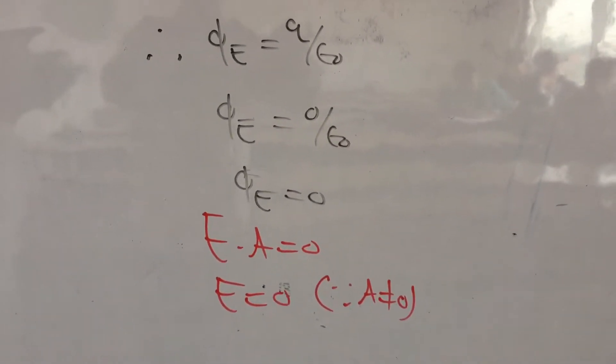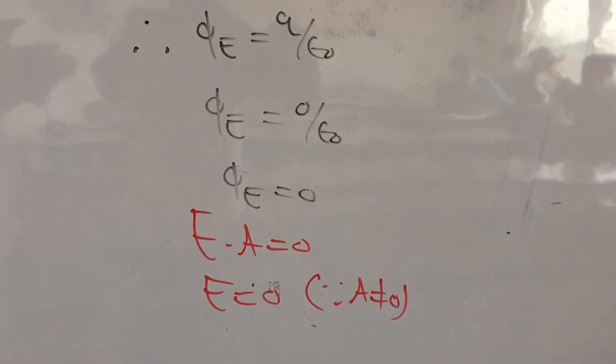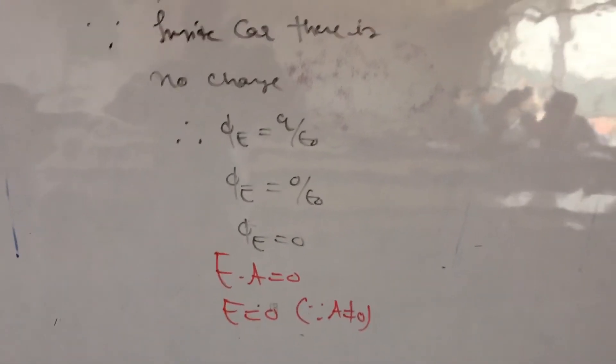Now, phi is what? E into A equal to 0. Area cannot be 0, so E is equal to 0. Inside the car, there is no electric field.